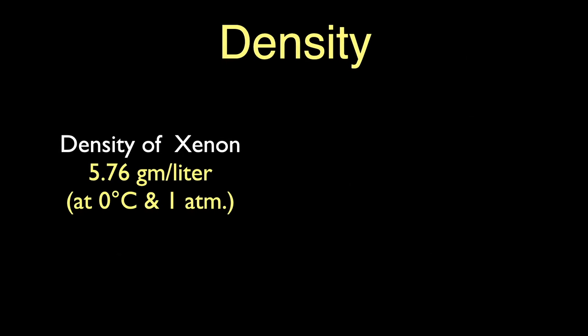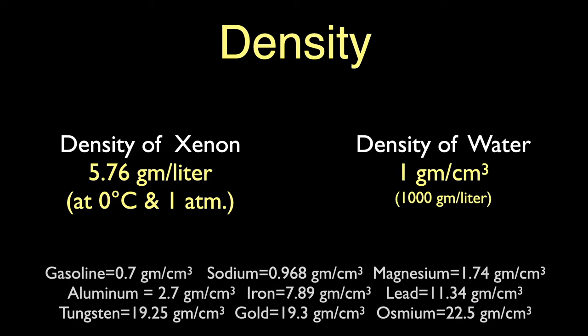Xenon is a dense gas at almost six grams per liter of gas. That's about four and a half times the density of the Earth's atmosphere at sea level. I've put up a few more densities for you here, but remember we're comparing a gas to a liquid here, water, and also some solid elements. That's not really a fair comparison.